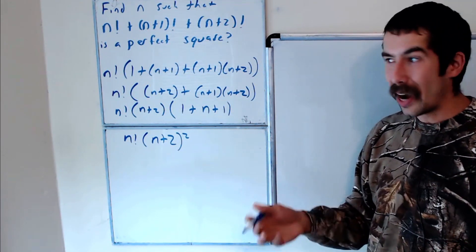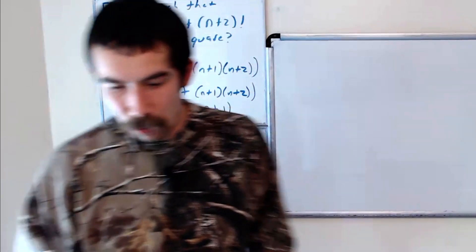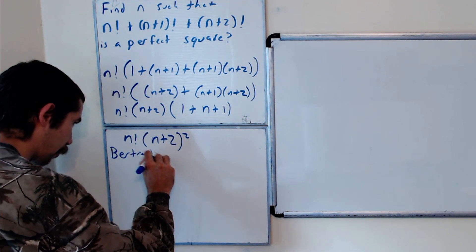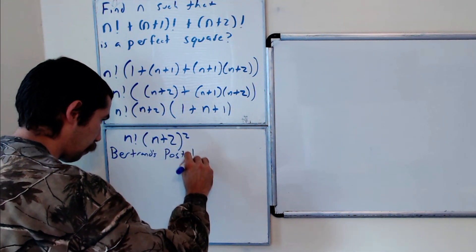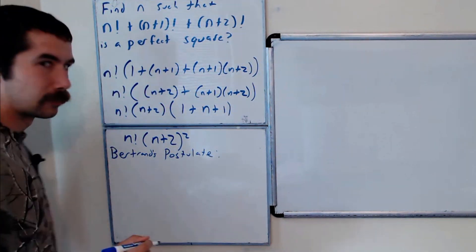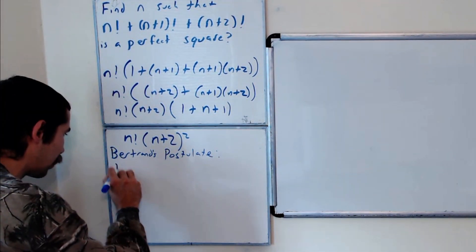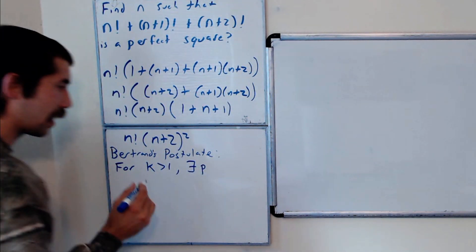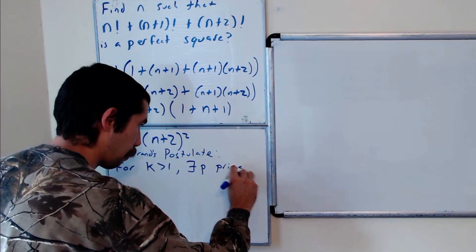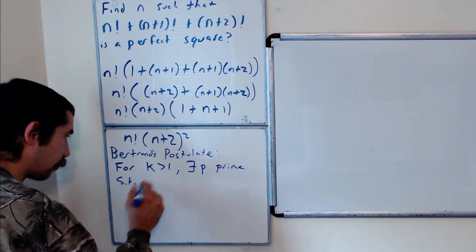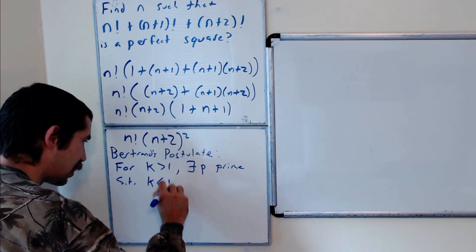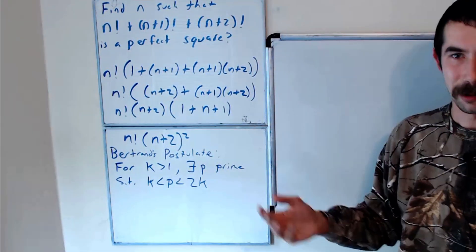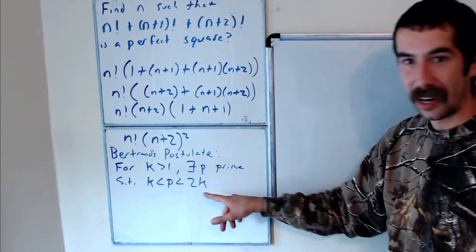To find this, we're going to use what's known as Bertrand's Postulate. Bertrand's Postulate states: for k greater than 1, there exists a prime p such that k is less than p, which is less than 2k. So for all k greater than 1, there's always a prime between k and 2k — and this is really amazing.